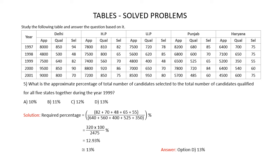So the required percentage is (82+70+48+65+55) divided by (640+560+400+525+350) = 12.93%, which is approximately 13%. The correct answer is option D: 13%.